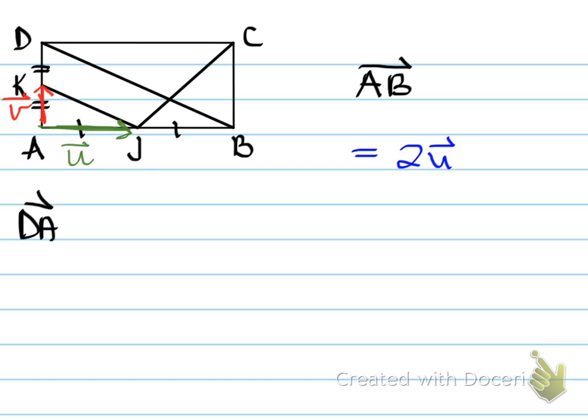Let's look at the next one, DA. What does that mean? We want to go from D to A. Well, the value of that is going to be negative 2v, because from D to A we're actually going in the opposite direction.